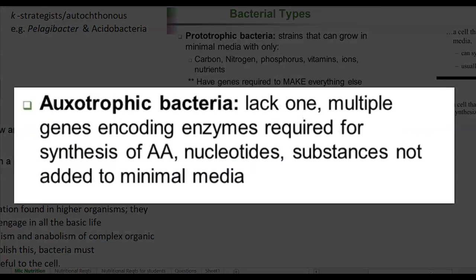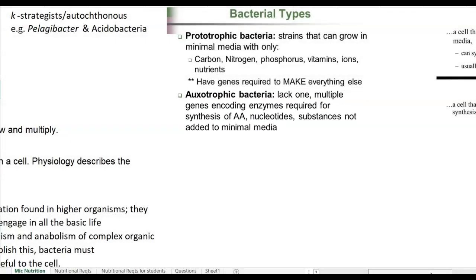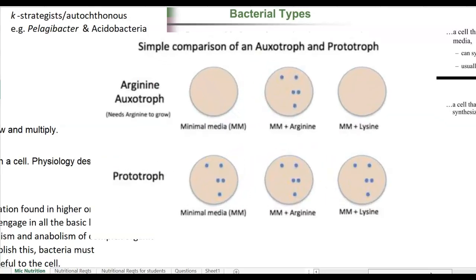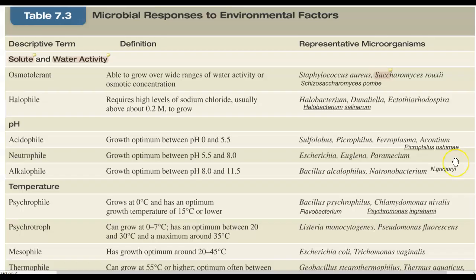Auxotrophic bacteria lack certain genes encoding specific enzymes, so the biosynthetic products of those enzymes must be artificially supplied in the media. In a minimal medium, specific nutrients must be added for these organisms to grow.